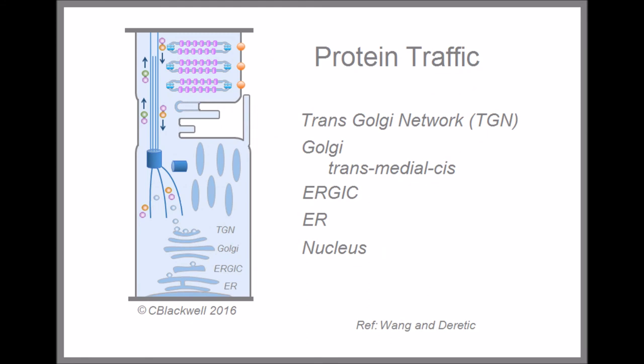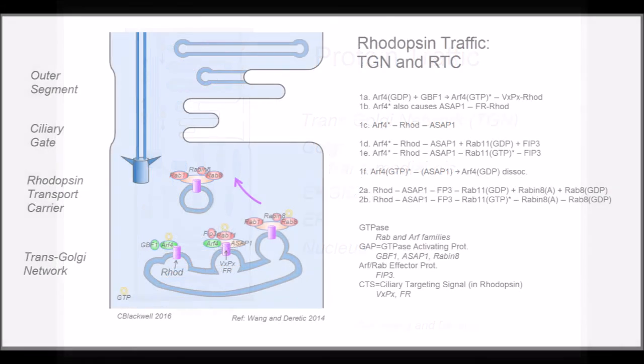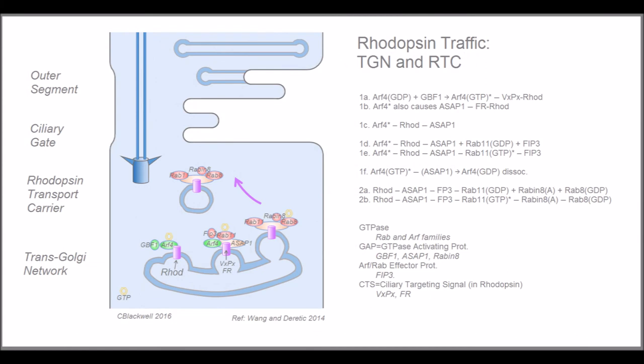A minute ago, we noted that rhodopsin is synthesized by the endoplasmic reticulum. In the Golgi and trans-Golgi network, it is packaged into vesicles destined for the outer segment. That packaging and targeting process are summarized in this very busy illustration.